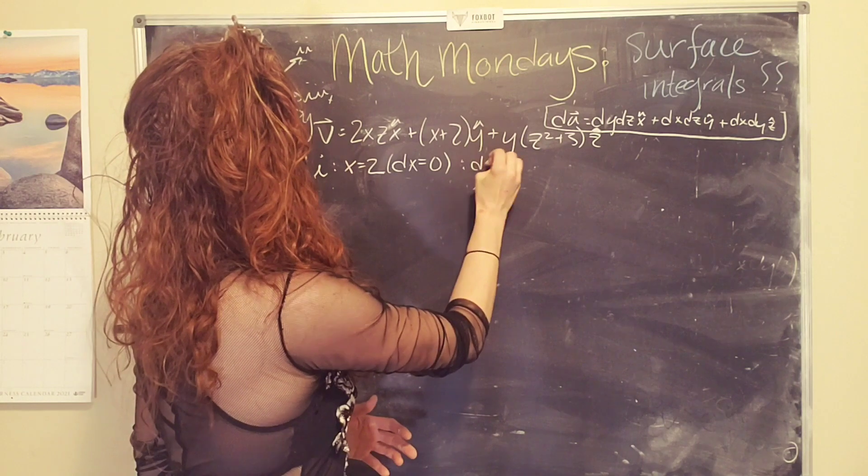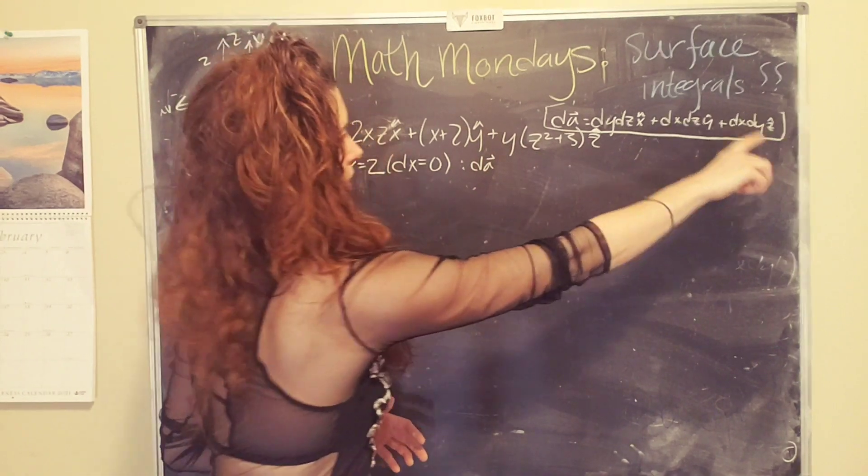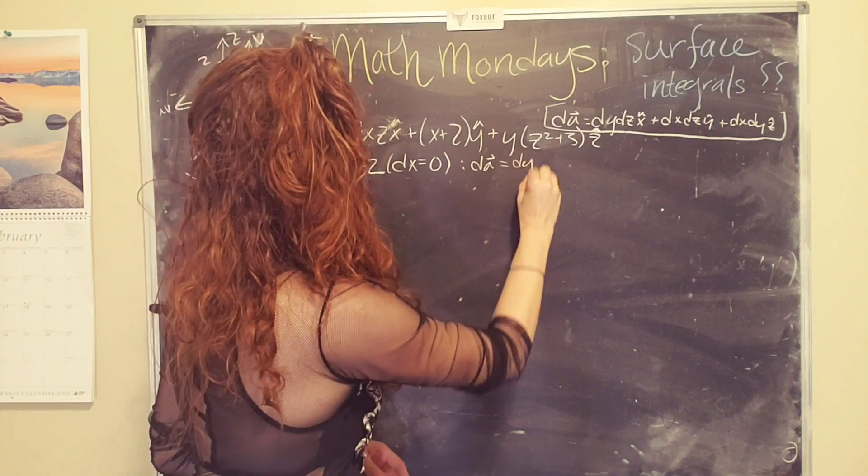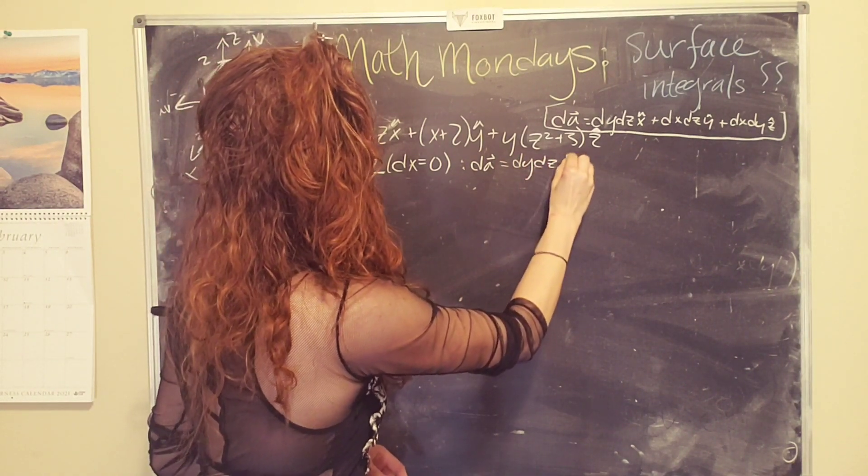Our dA vector simplifies a great deal. Anything with dx goes to zero. And so then that means that the only thing left is, uh, whoopsies, no, the x hat one, not the z hat one. So this equals dy dz x hat.